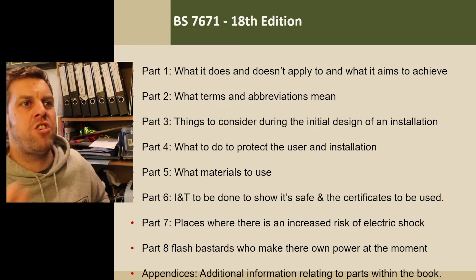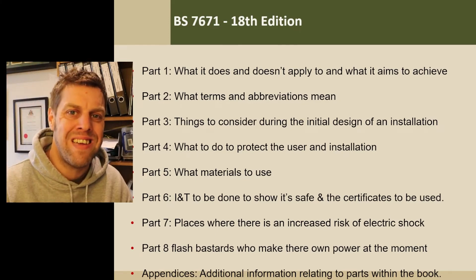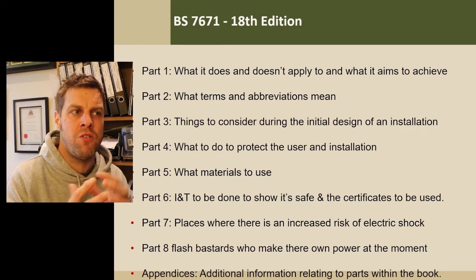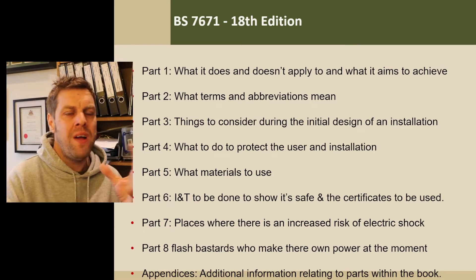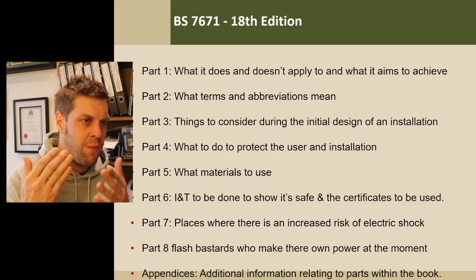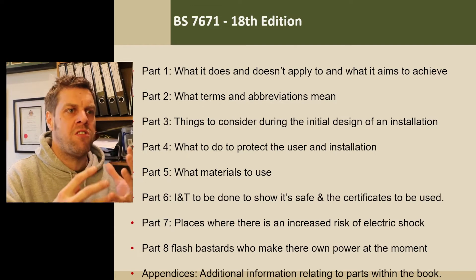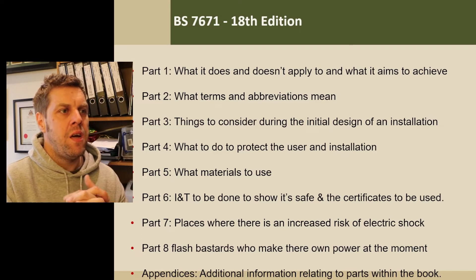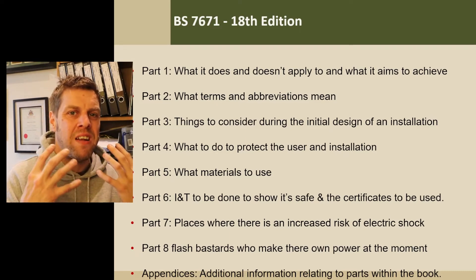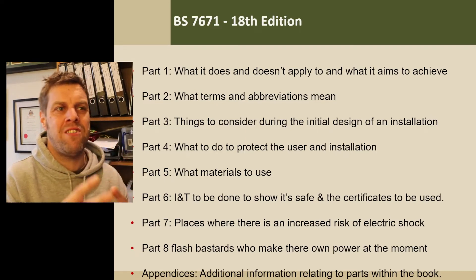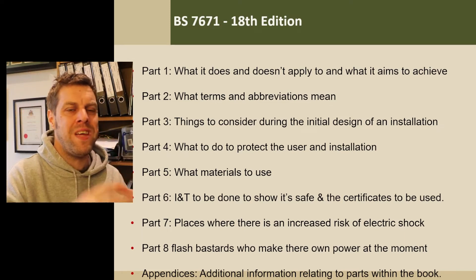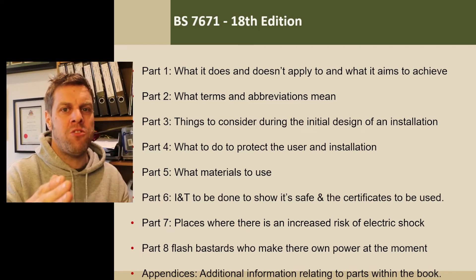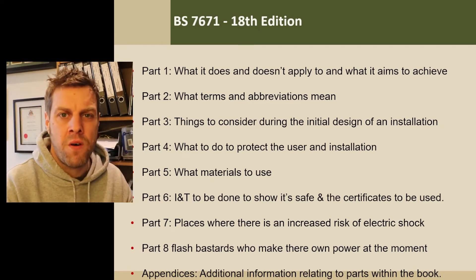So part two - I've put what terms and abbreviations mean. I also call it the dictionary, the electrical dictionary. And in my head I've got all these thoughts and feelings about part two and what it is. Part four is when I'm picking things that protect me - RCDs, fuses, MCBs. Part five is selection and erection, which I understand as what materials to use and how to make things. It's important that you get to flow with this because it's all about when asked a question, your brain should be thinking: that's part four things asking me.